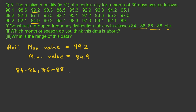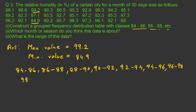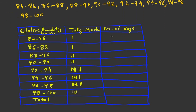The data ranges from 84.9 to 99.2, so the intervals required are 84–86, 86–88, 88–90, 90–92, 92–94, 94–96, 96–98, and 98–100. We draw a grouped frequency distribution table with these class intervals. After completing the tally marking and writing the number of days, the total comes to 30. This is the grouped frequency distribution table for the given data.